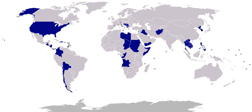1906–1909, Cuba, September 1906 to January 23, 1909: U.S. forces sought to protect interests and reestablish a government after revolutionary activity. 1907, Honduras, March 18 to June 8: to protect American interests during a war between Honduras and Nicaragua. Troops were stationed in Trujillo, Ceiba, Puerto Cortés, San Pedro Sula, Laguna, and Choloma.